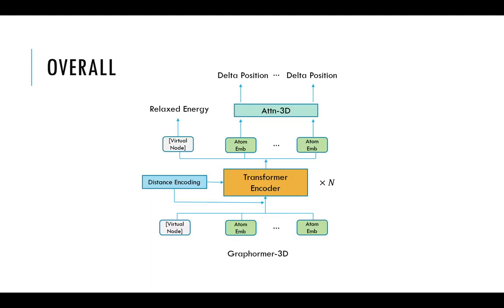This is the overall architecture of Graphormer for 3D molecular modeling. The spatial encoding and the centrality encoding will be derived from the distance encoding, and the relaxed energy is predicted from the virtual node token. And other atom tokens are processed by the 3D cross-attention to predict the delta position between initial and final structures.